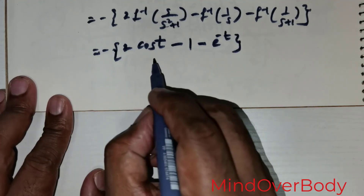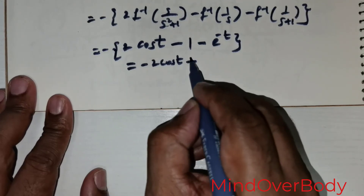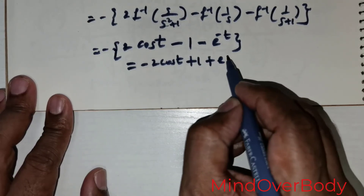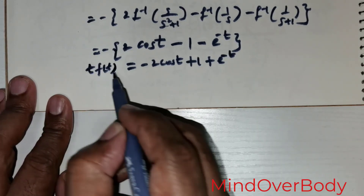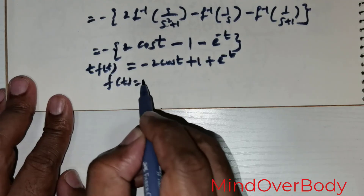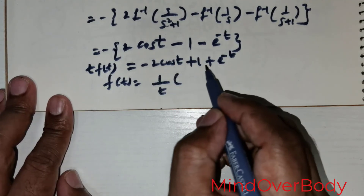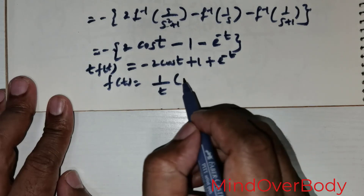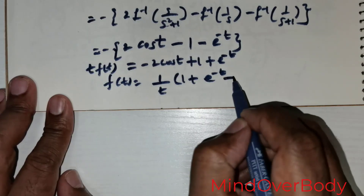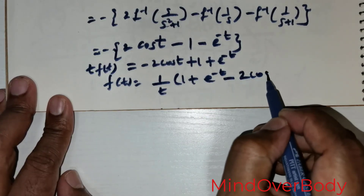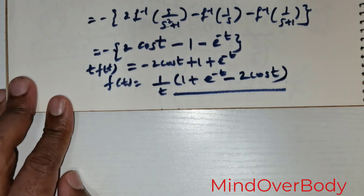Bringing the negative sign inside, this becomes negative 2 cos t plus 1 plus e to the power of negative t. But this is nothing but t times f of t. So to find f of t, we divide by t, giving f of t equals 1 over t times quantity 1 plus e to the power of negative t minus 2 cos t. This is the solution to the question, students.